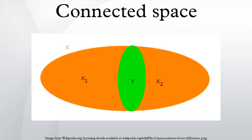Examples: the closed interval [0, 2] in the standard subspace topology is connected, although it can be written as the union of [0, 1) and [1, 2]. The second set is not open in the chosen topology of [0, 2].